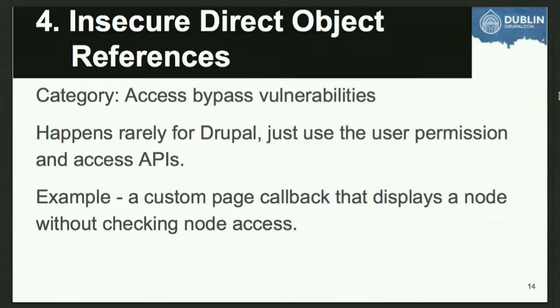OWASP Top 10 number four doesn't happen too often in Drupal: insecure direct object references. This is basically when there's a way to type in a URL that loads data the user shouldn't have access to. If you use access checks - access callbacks in the Drupal 7 menu system or the Drupal 8 routing system - unless you make a mistake writing them, you'll be protected.